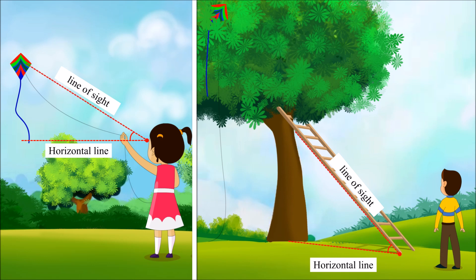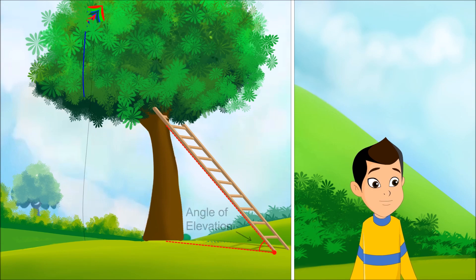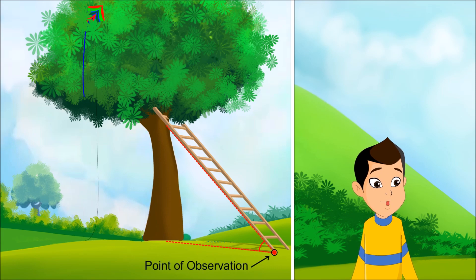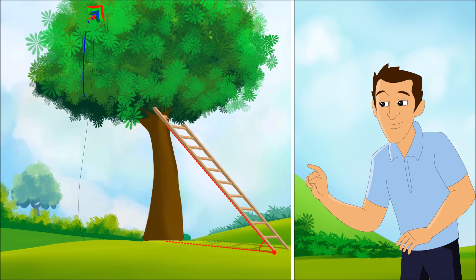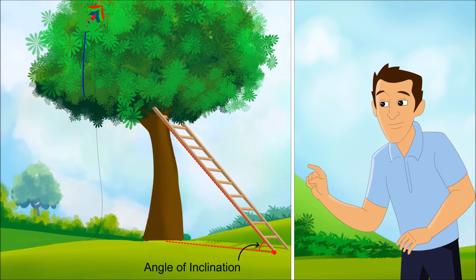A line of sight is an imaginary line from the eye of an observer to the object. The angle formed between the ladder and the ground is called the angle of elevation, and the point of contact with the ground is called the point of observation. As the ladder is inclined with the tree, it is also called an angle of inclination.